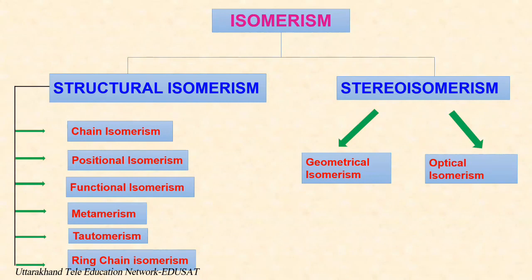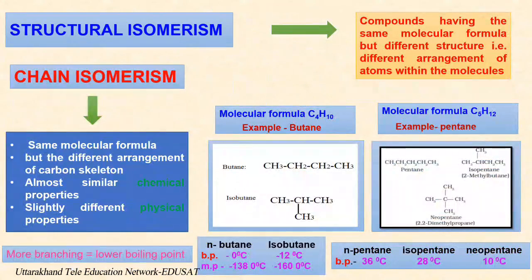Stereoisomerism is a form of isomerism in which molecules have the same molecular formula and same constitution, but differ in the three-dimensional orientation of atoms in space. Structural isomerism is further divided into chain isomerism, positional isomerism, functional isomerism, metamerism, tautomerism, ring-chain isomerism. And stereoisomerism is divided into geometrical isomerism and optical isomerism.